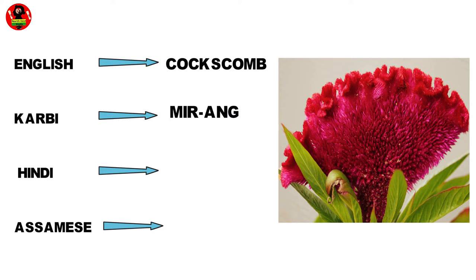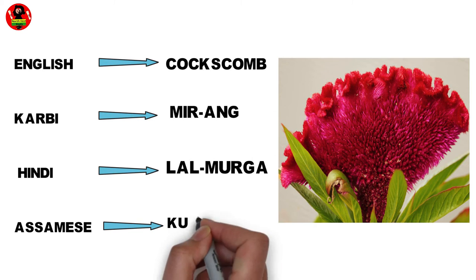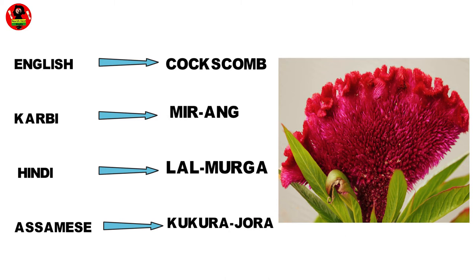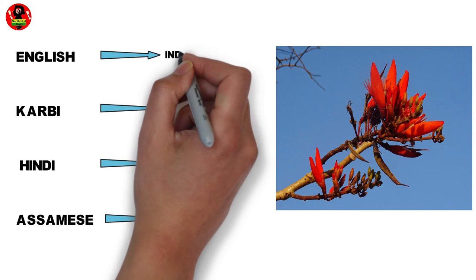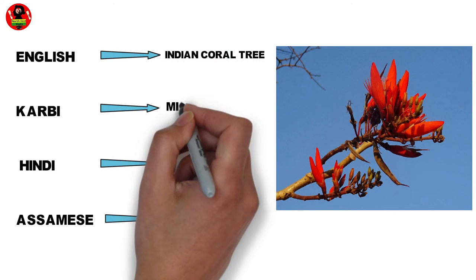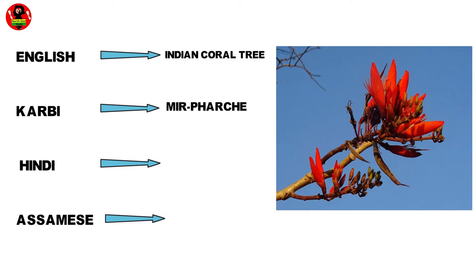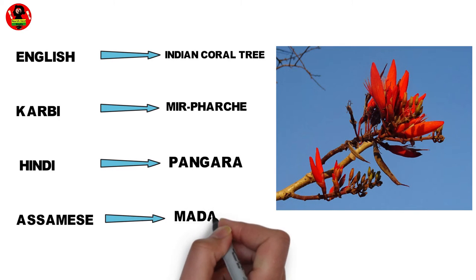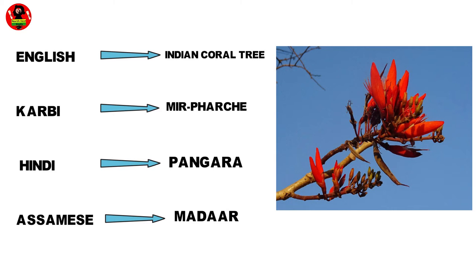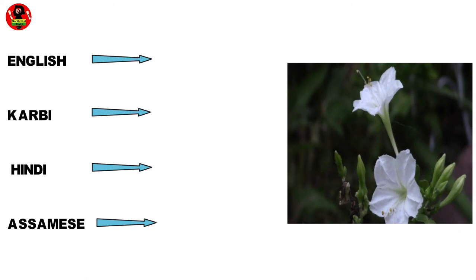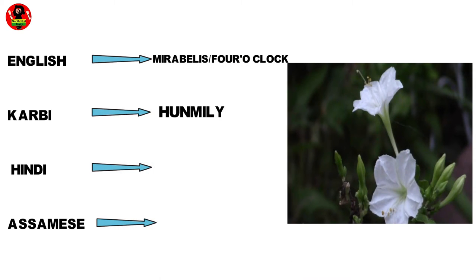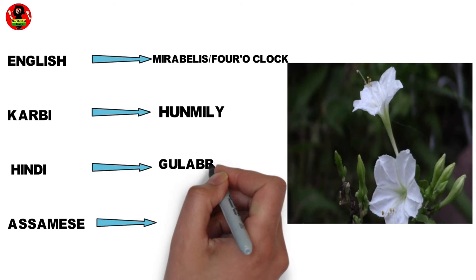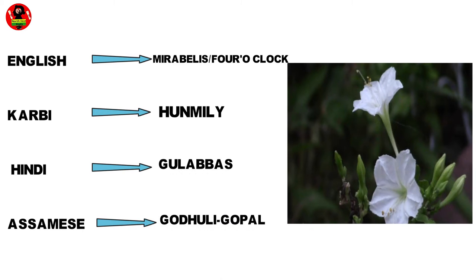Mirang, Lalam Murgah, Kukura Jura, Indian Coral Creek, Mirpharche, Mangara, Madar, Mirabelis or Forkak, Kunmili, Gulab Bas, Guduli Gopal.